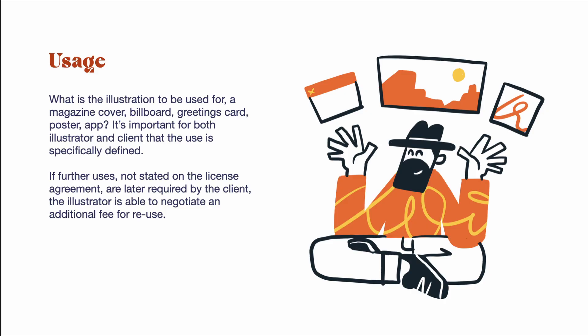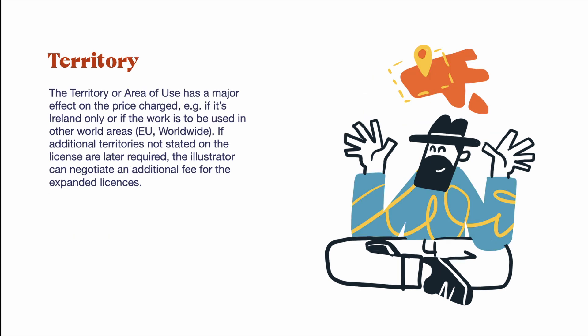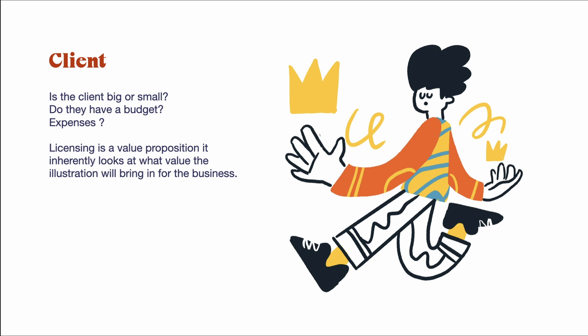To sum up: when it comes to pricing for illustration, you don't want to give away your IP unless it's a very specific job like branding or a logo, in which case you can charge a substantial fee for selling your IP. The four key areas to consider are: one — usage (what is the illustration going to be used for); two — duration (how long will the client use it); three — territory (one country, a region, or worldwide); and four — evaluating the client themselves and whether it is a small problem job or a big problem job.